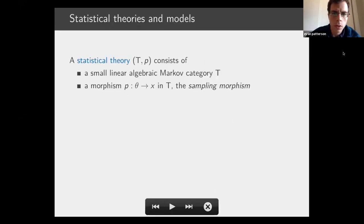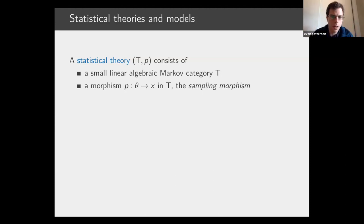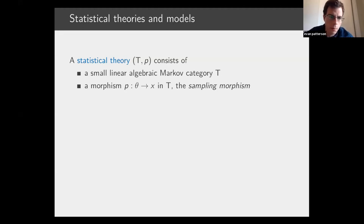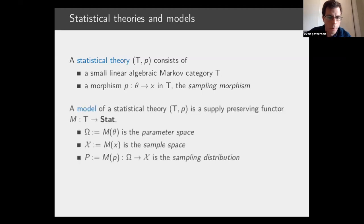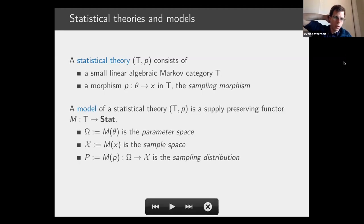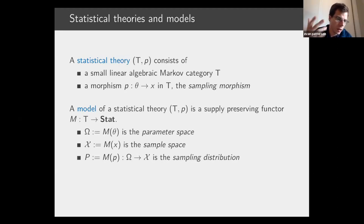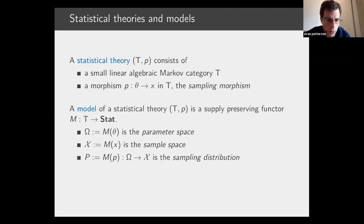Having set this up, we say a statistical theory consists of a small linear algebraic Markov category T together with a designated morphism in T representing the sampling distribution. A model of a statistical theory is then a supply-preserving functor from T into the category Stat. In particular, you get a parameter space, a sample space, and a sampling distribution — just as in the classical setup.